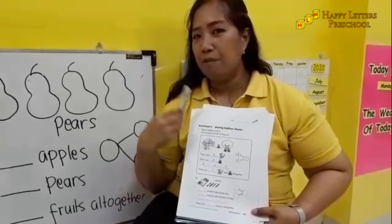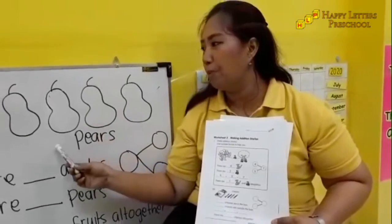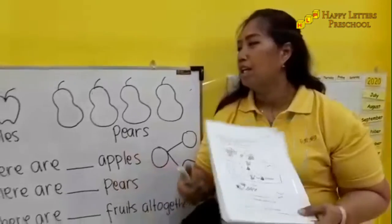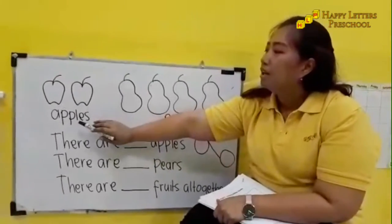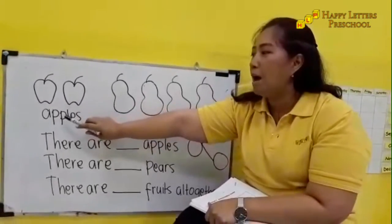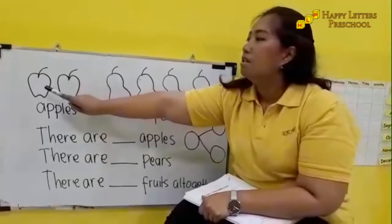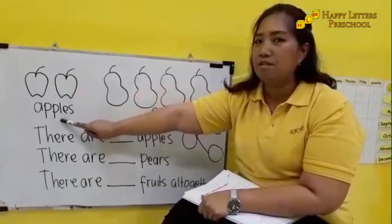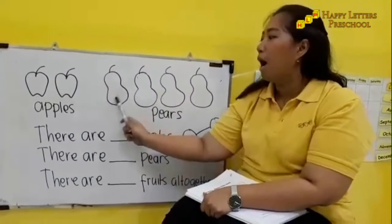Before we move to the worksheet, I need you to pay attention to the board. We can look at this one. Miss Fania has how many apples? One, two - two apples. And pears, how many pears? One, two, three, four - four pears.